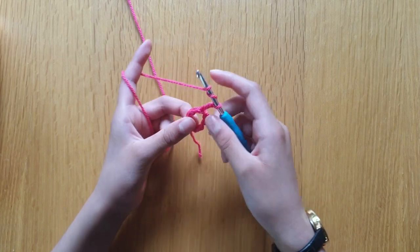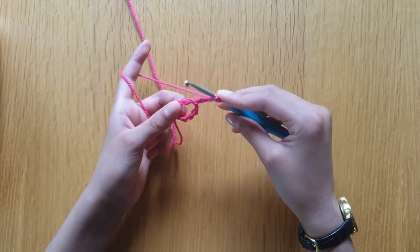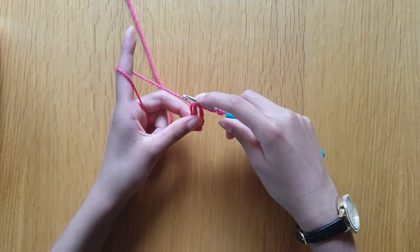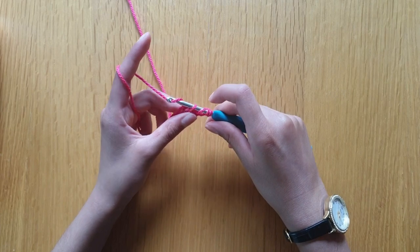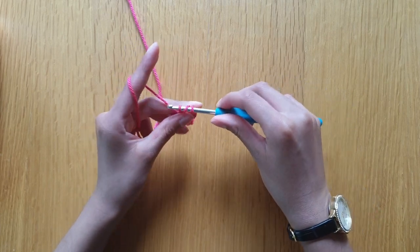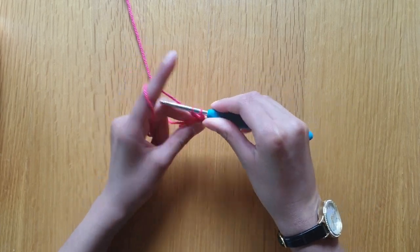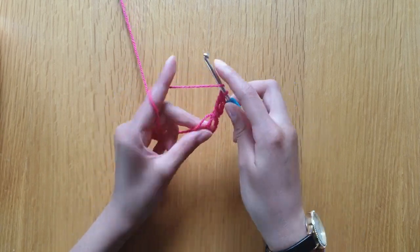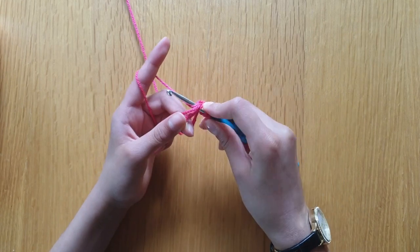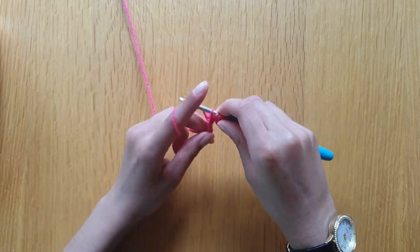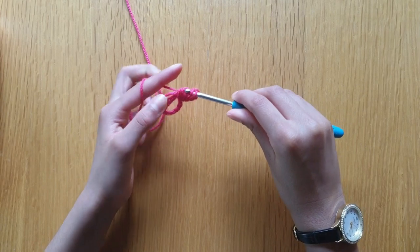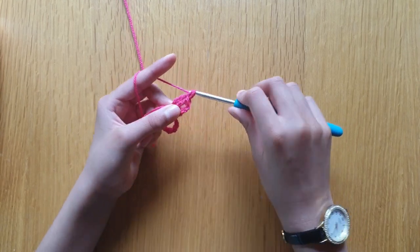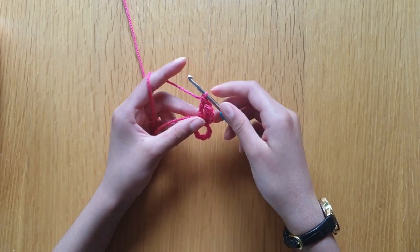We've got our yarn, two yarn overs, insert in the hook, yarn over, pull through, yarn over, pull through two loops, yarn over, pull through two loops, yarn over, pull through two loops. Yarn over, pull through two, yarn over, pull through two, yarn over, pull through two.